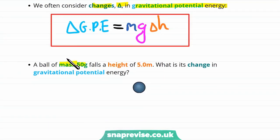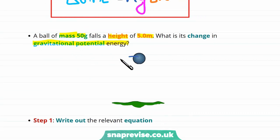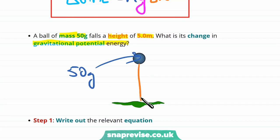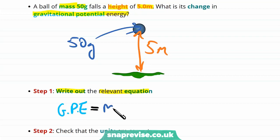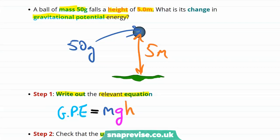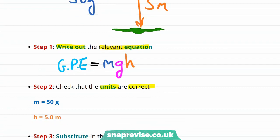Let's look at an example. A ball of mass 50 grams falls a height of 5 meters. What is its change in gravitational potential energy? Our first step is to write out the relevant equation: gravitational potential energy equals mass multiplied by gravitational field strength multiplied by height. Our next step is to check that the units of the quantities we've been given are correct.